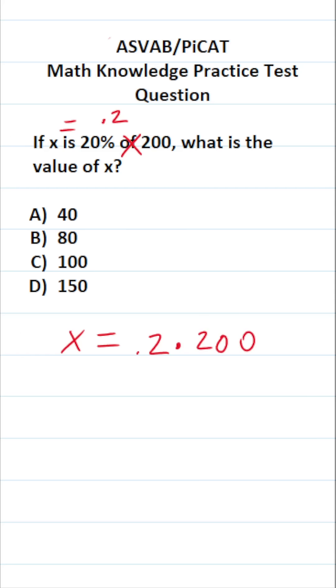So to solve this one, all we need to do is x equals 0.2 times 200. Now, some of you can't do that mentally, so do this off to the side. There's no shame in doing that, especially since you don't get a calculator on the test.